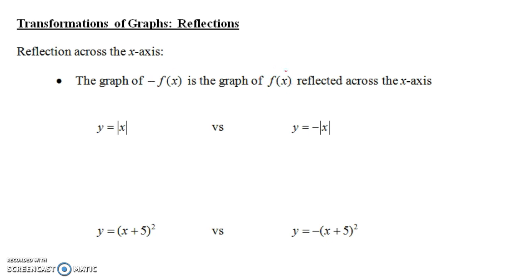So if f(x) has some formula, like the absolute value of x, then negative f(x) would be negative the absolute value of x. So whatever f(x) is, if you put a big negative in front of the whole formula — put the formula in parentheses and put a big negative in front of it — the graph flips upside down.